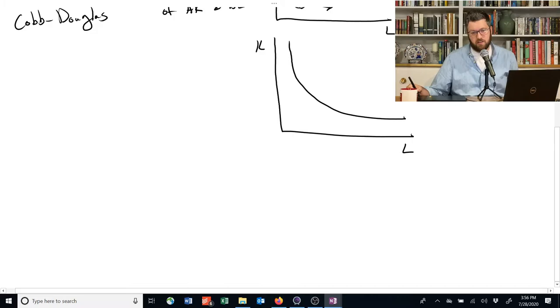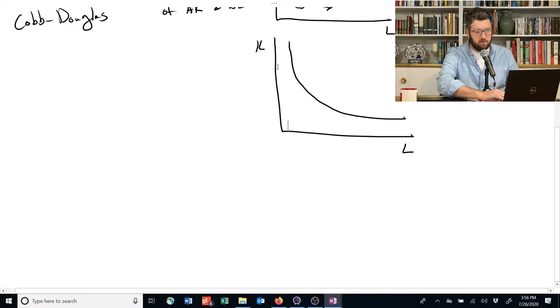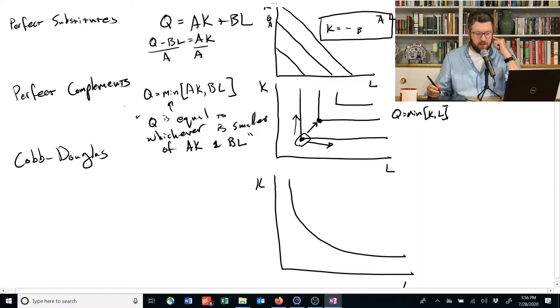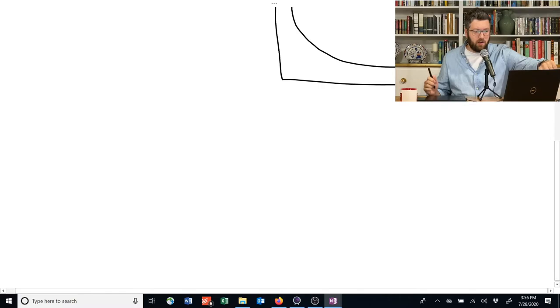And notice that these look kind of like perfect substitutes in the middle. So in the middle here, like in the fat pad of that curve, it's almost like a line. And on the edges, they sort of start to look like, so it looks kind of like a line here for a lot of the way. But then over on the edges, you approach sort of the vertical or horizontal directions of those perfect complements.